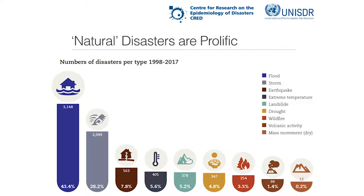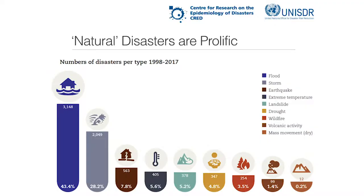Natural disasters are prolific — we hear about them from time to time, but they're going on all the time. I put the word 'natural' in quotes because as social scientists, we have the perspective that most disasters are not purely natural. We have a lot of influence in causing them, amplifying them, and governing their effects. This data from an international research center in Belgium — funded by the World Health Organization — shows the number of disasters over a 20-year period, and floods dominate in terms of how often they happen.